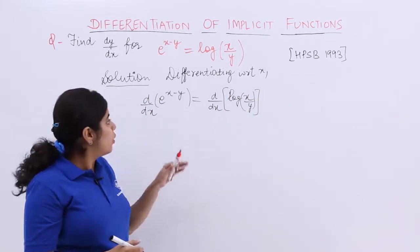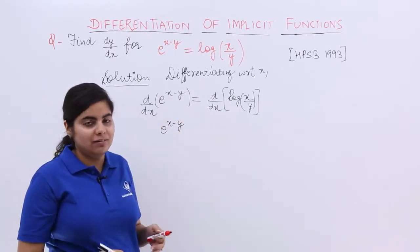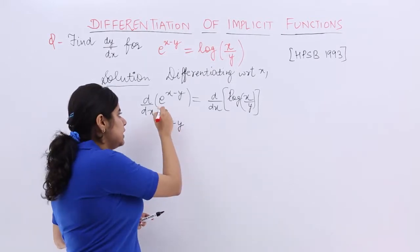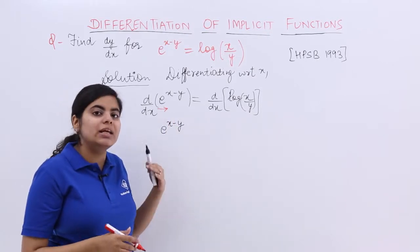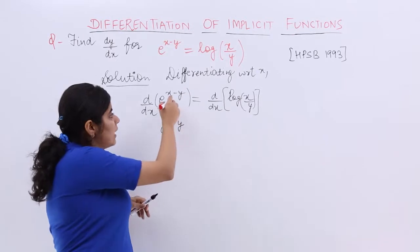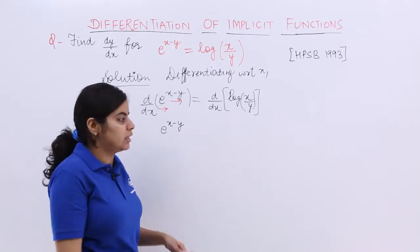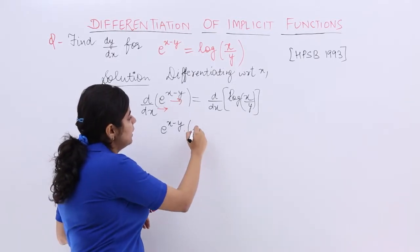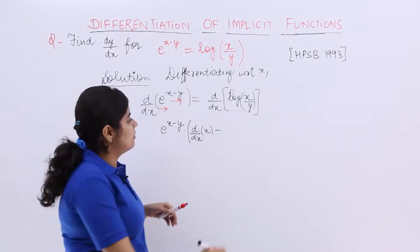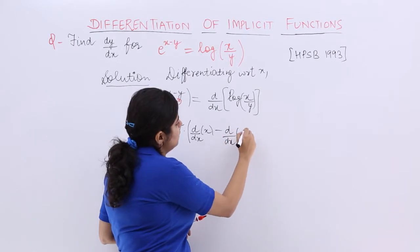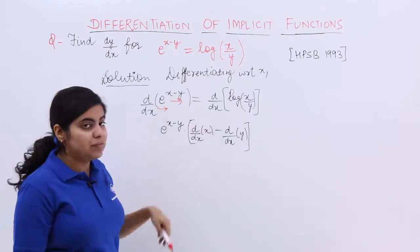What is the differentiation of e raised to the power something? It is that same thing, but we also apply the chain rule. You wrote the same function because differentiation of e raised to the power something is that thing only, but then you saw x minus y, so chain rule applies. X minus y also needs to be differentiated — the differentiation of x with respect to x, and then the differentiation of y with respect to x.